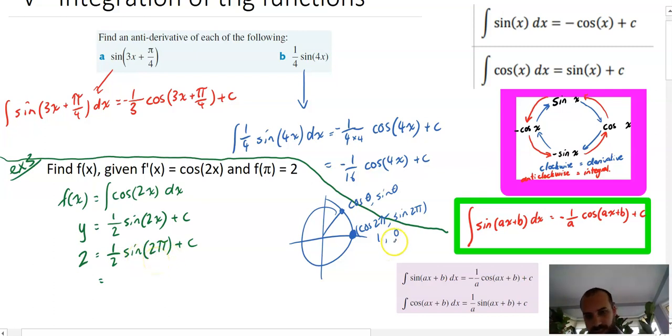So that means that 2 equals one half times sine 2 pi which is zero plus c. 2 equals a half times zero, half times zero, zero, so 2 equals c. Then we can finish this off by saying therefore f of x is equal to, well we said that f of x is equal to half sine 2 x plus c.